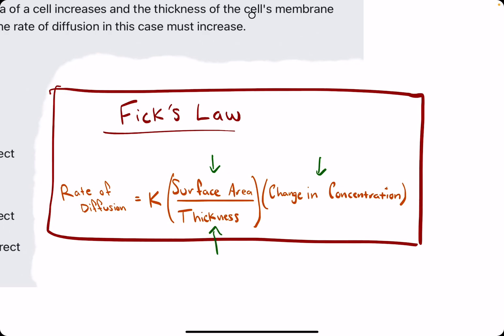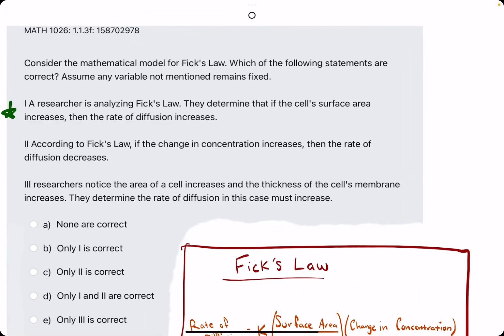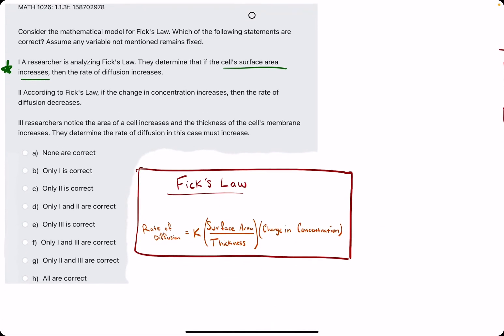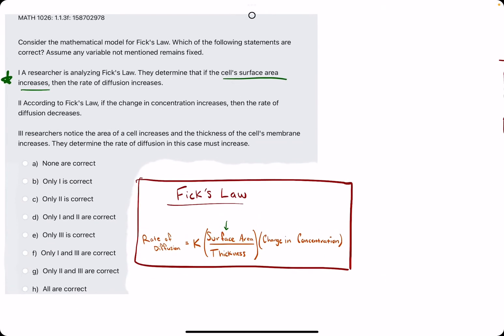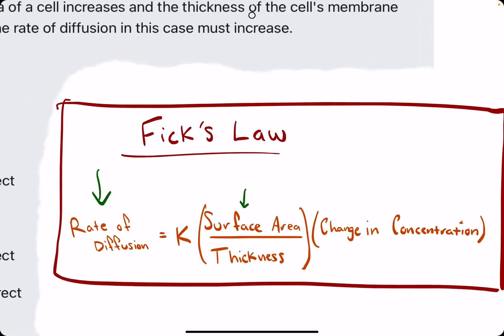So, checking out number 1, they say they determined that if the surface area increases, so surface area is in the numerator, then the rate of diffusion should also increase. That is a true statement because they're directly proportional because surface area is in the numerator.